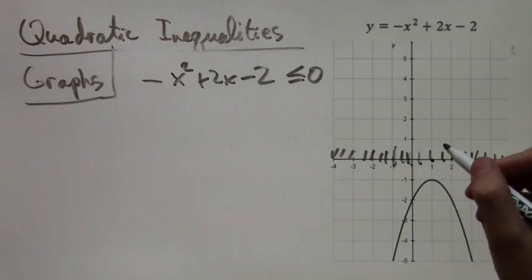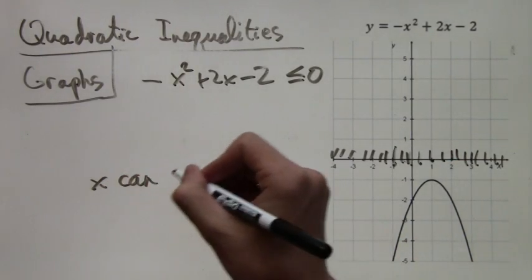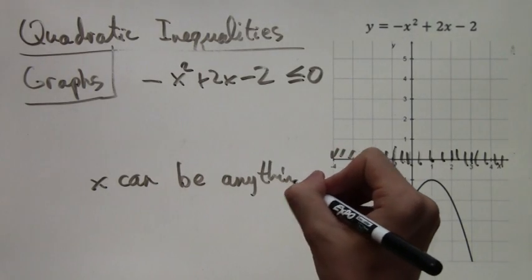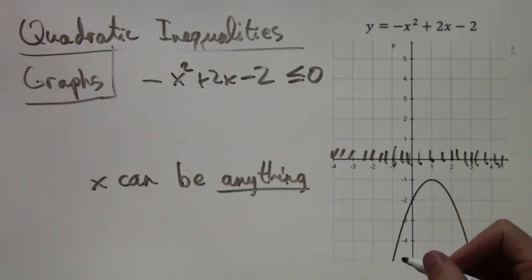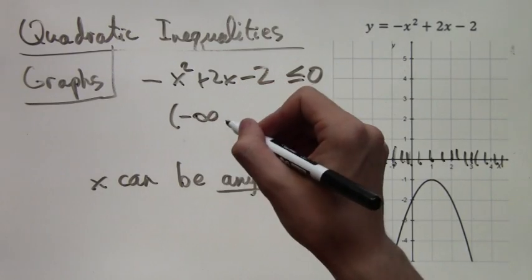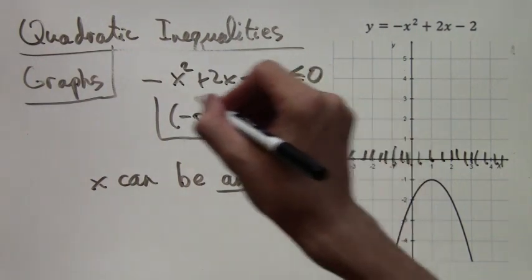So any x works. So how would we write this down? If x can be anything, what is the interval notation for this? Well, it's quite simple. It's just negative infinity comma infinity. It includes all numbers.